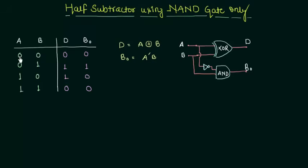0 is A and 0 is B in the first case. If I subtract 0 from 0 definitely the difference D is 0 and also the output borrow will be 0. Similarly if I subtract 1 from 0 I have to take the borrow. So the borrow output will be 1.